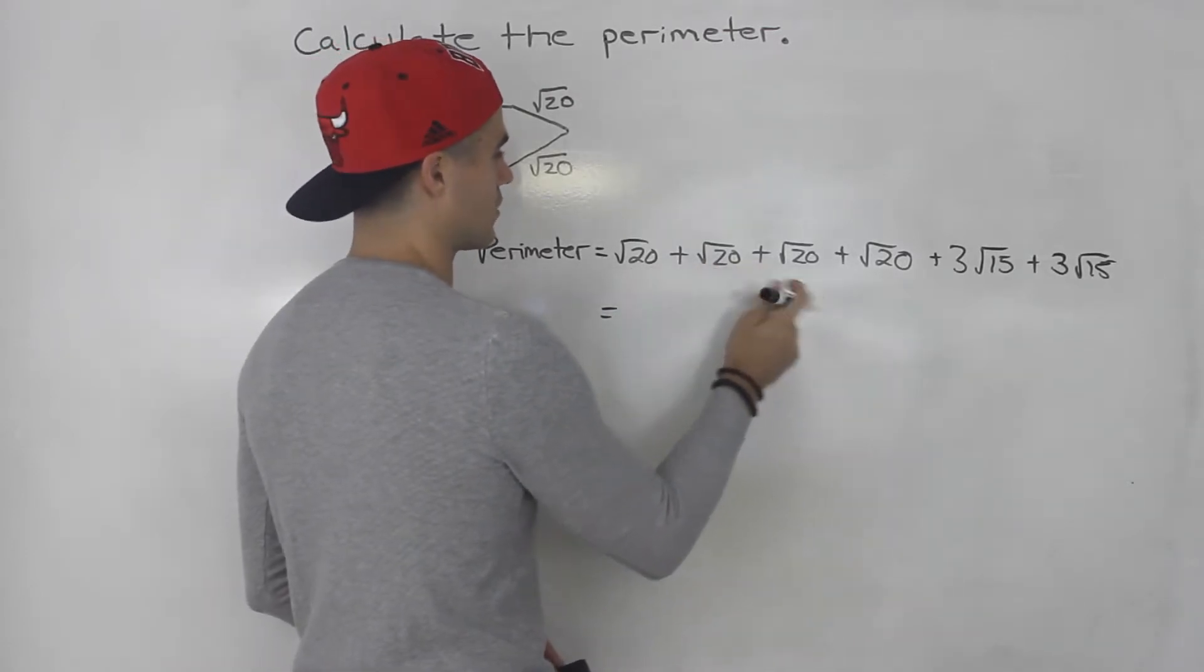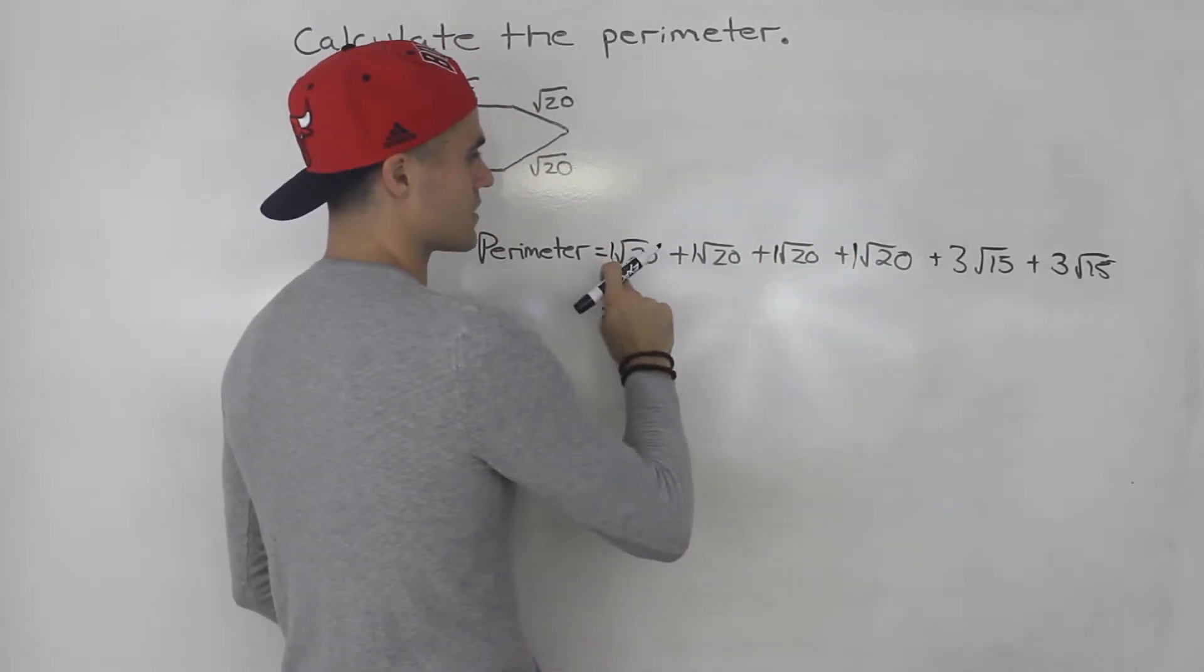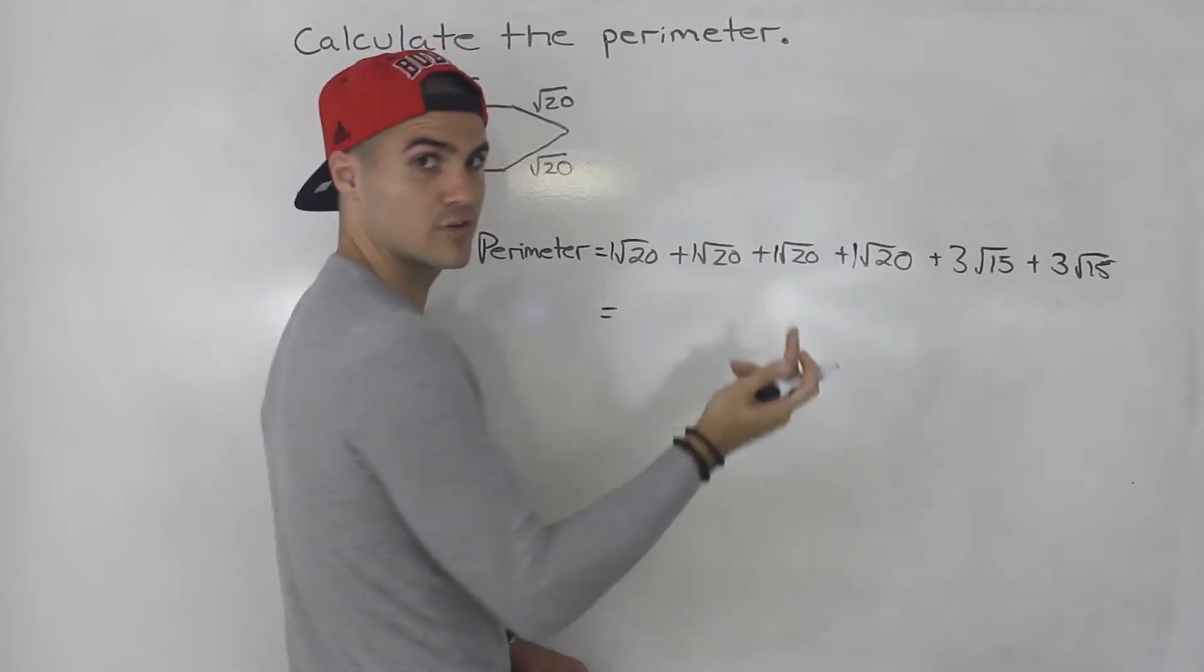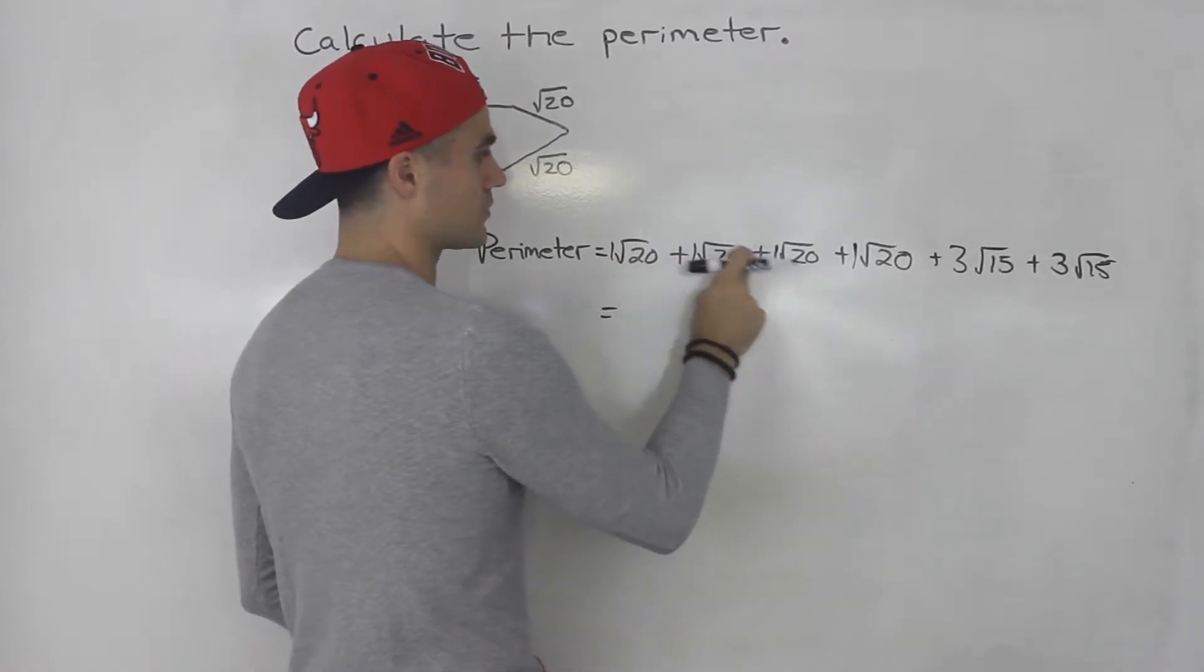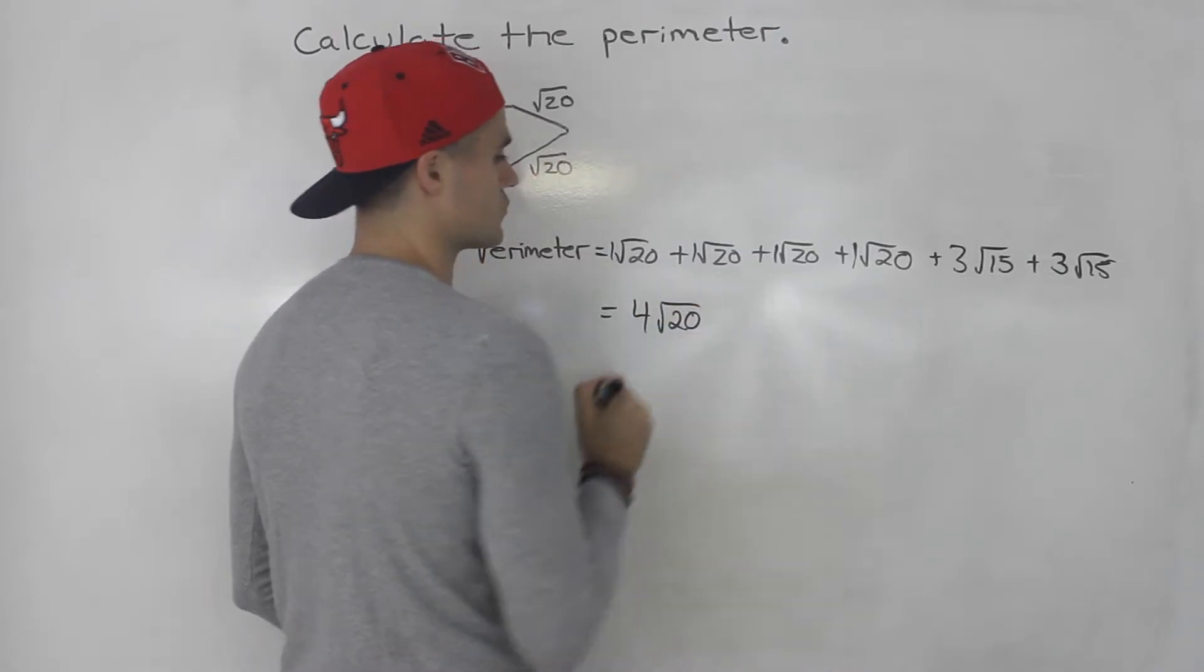So notice that the root 20s, they're all like terms and there's like a one in front of all of them. So if you add all of these up, you add the coefficients in front. One plus one plus one plus one gives us four. And then the radical root 20 stays the same.